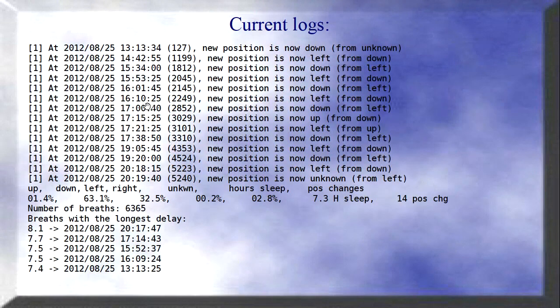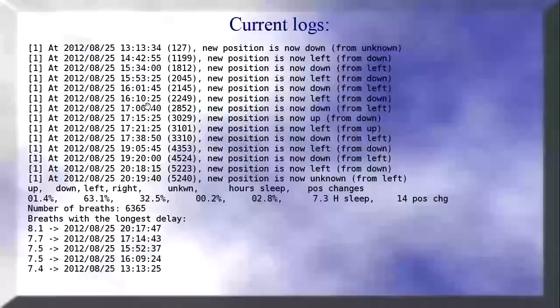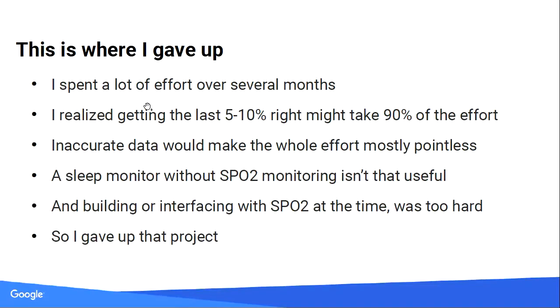Eventually I got data that was a little bit better. I was able to get my sleep position — hours of sleep, left, right, and breath. Breath with longest delay: here it shows about eight seconds of no breathing at this point in the logs. This was nice and good, but this is kind of where I gave up — I was missing that last 5-10%, and that last 5-10% was going to be 90% of the effort.